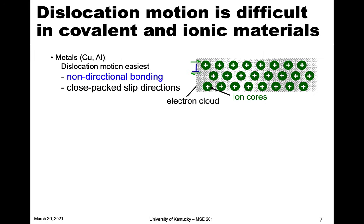For metals such as copper and aluminum, dislocation motion is quite easy — the easiest of the classes of materials. The reason is non-directional bonding, where bonding is the same in all directions with no preferential direction. We also have close-packed slip directions, which aid the material's ability to move as a dislocation. In a metal, you can think of ion cores with an electron cloud not tied to any particular ion, making them free to move. When we apply a shear stress, these ion cores can move past each other very easily.